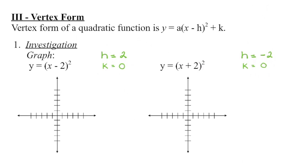Remember a cannot equal 0, as that gets rid of the entire squared term. We have this x minus h squared term. Here we have x minus 2, so that 2 is the value of h. Then k is the value that we add or subtract after that squared bracket. Because we're not adding or subtracting anything, I can see that I have a k value of 0.